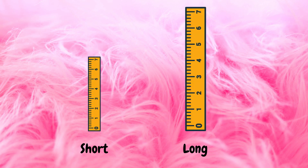Here we have two rulers: one is 15 centimeters and one is 30 centimeters. The 15-centimeter ruler is short, and the 30-centimeter ruler is long. This was the concept of long and short. In this video we covered three concepts of mathematics. I hope to share more videos with you. Thank you for watching!